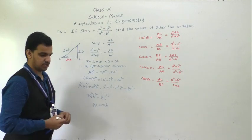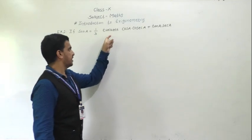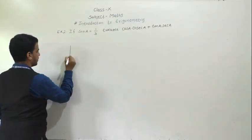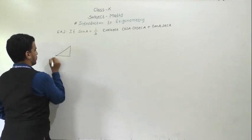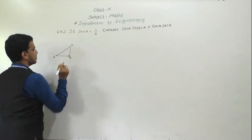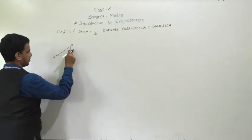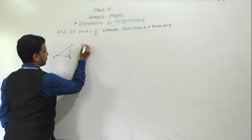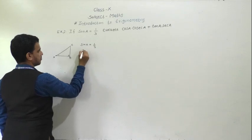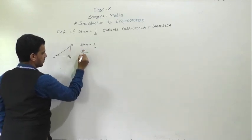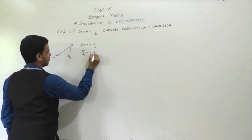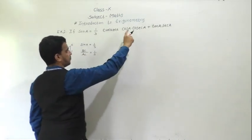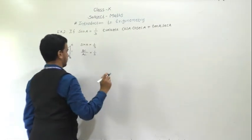Now we will take the second example. If sin A equals 1/3, evaluate cos A · cosec A + tan A · sec A. First draw a right triangle ABC. Sin A is given as 1/3. Here angle A is at A, so the opposite side BC upon hypotenuse AC equals 1/3. So BC is 1 and AC is 3. By Pythagoras theorem we can find AB.